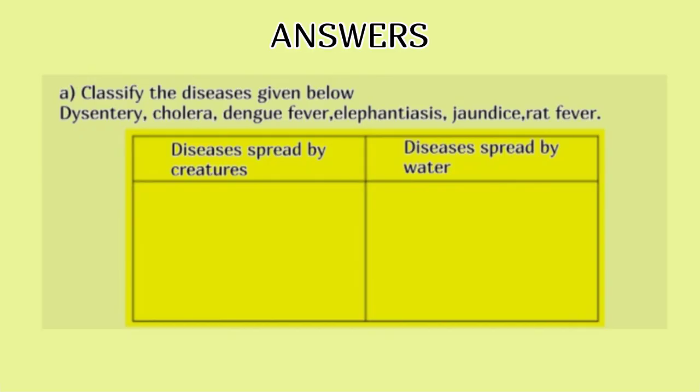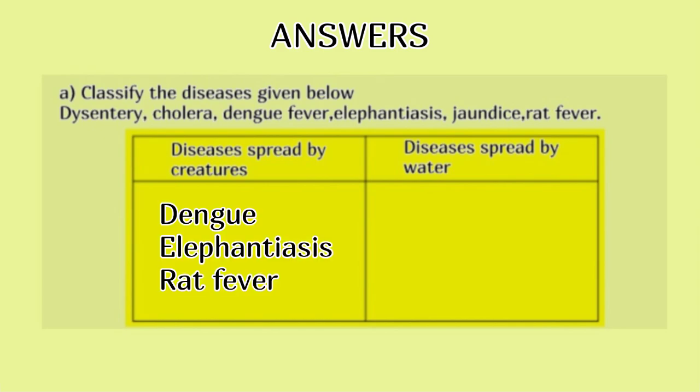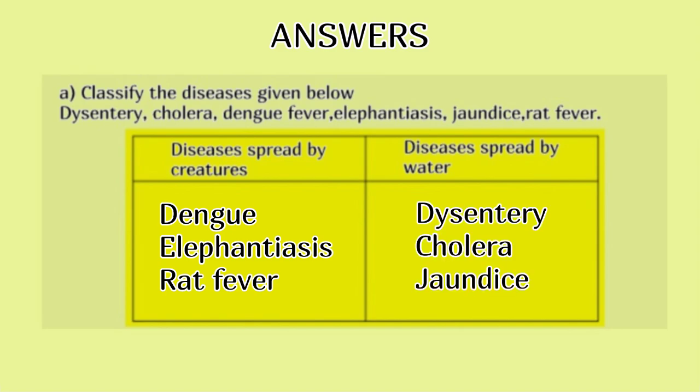Answers. A. Classify the diseases given below. Diseases spread by creatures: Dengue, Elephantiasis, Rat Fever. Diseases spread by water: Dysentery, Cholera, Jaundice.